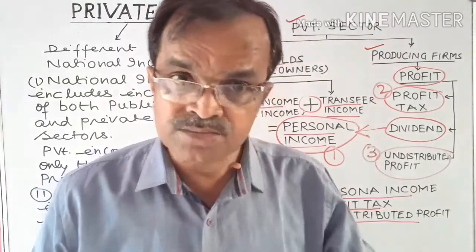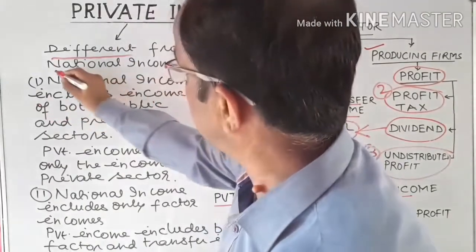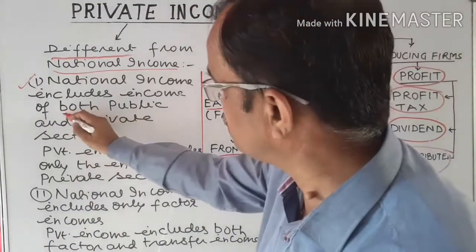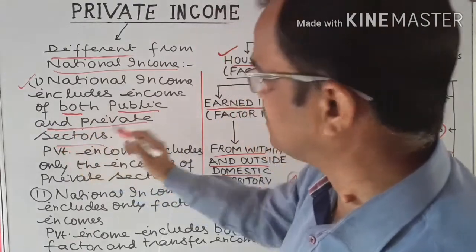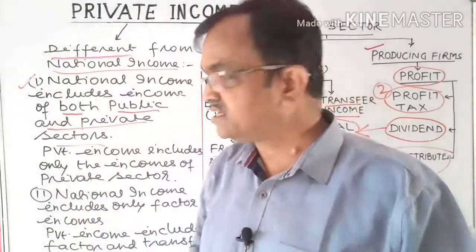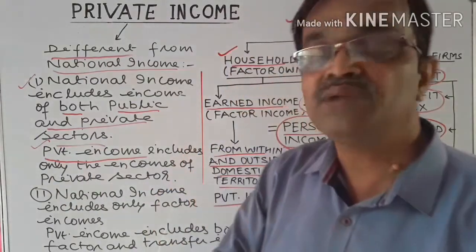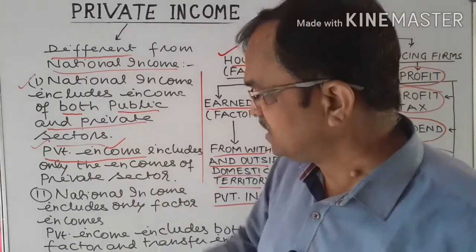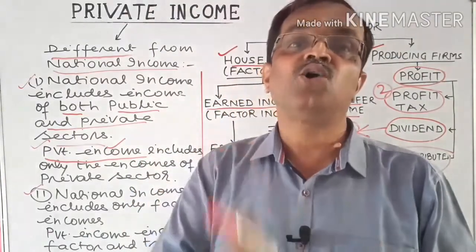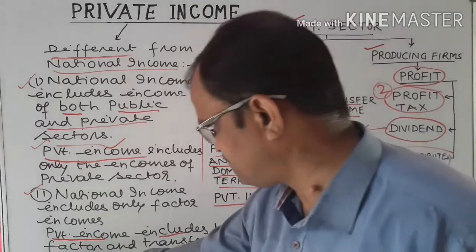There is a difference between private income and national income. First, national income includes both public and private sector income, whereas private income includes only private sector income — public sector income is not included. Second, national income includes only factor income (earned income) with no inclusion of transfer income, but private income includes both factor income and transfer income.